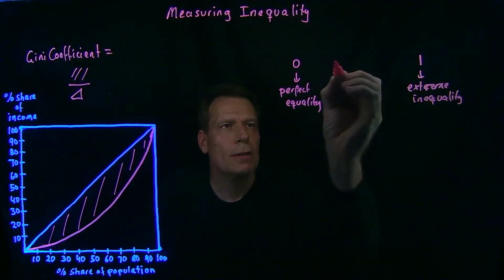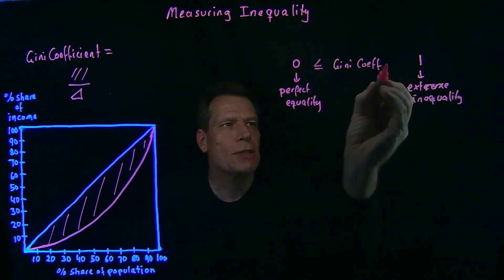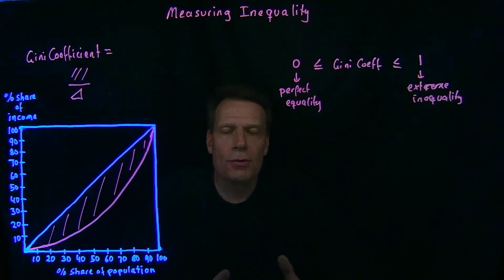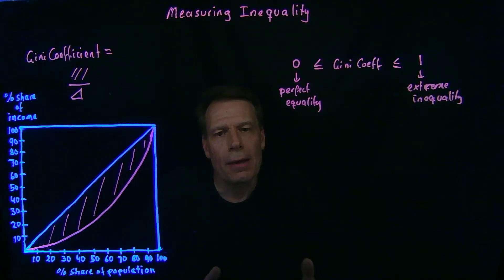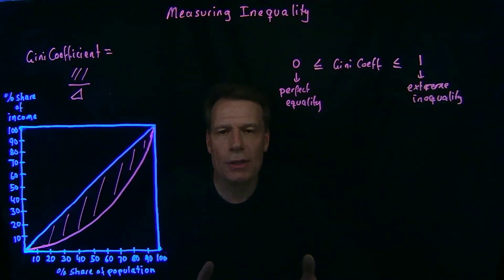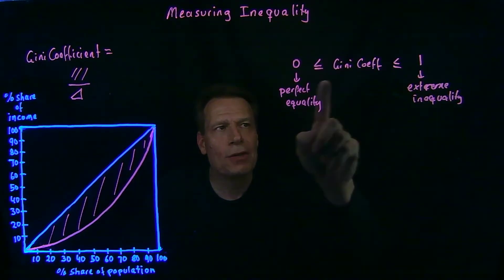The Gini coefficient lies between the values of 0 and 1, and the closer it gets to 1, the more inequality there is. Gini coefficients can use income, consumption, or wealth as the measure, so we can get lots of different kinds of Gini coefficients for a country. When we get together in class, we'll talk about how to think about the different kinds of inequality we could measure depending on exactly what it is we're measuring.